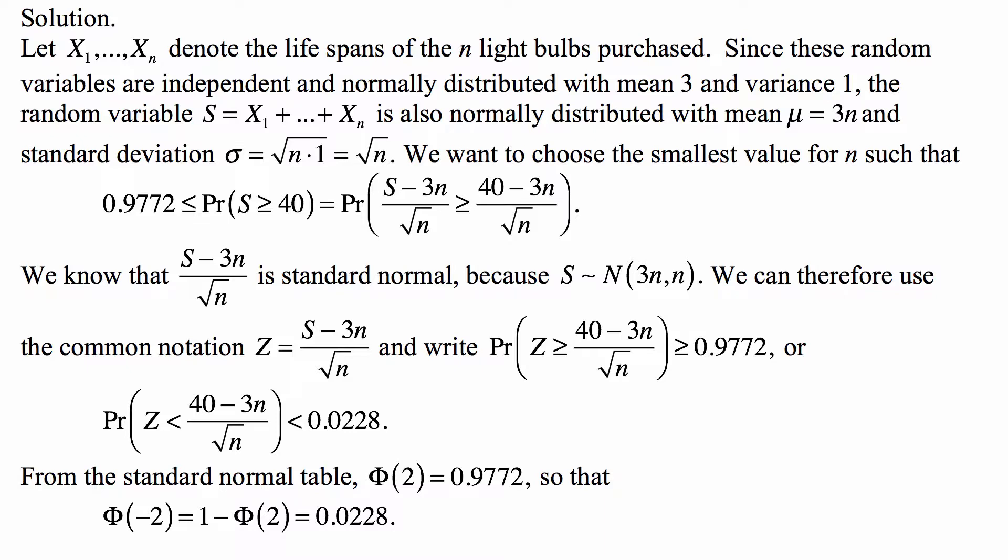Since these random variables are independent and normally distributed with mean 3 and variance 1 each, the random variable, which is the sum of them, is also normally distributed with mean equal to 3n and standard deviation equal to square root of n times 1, so square root of n.